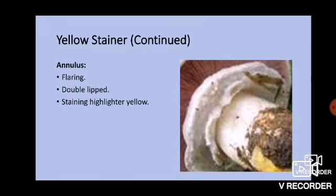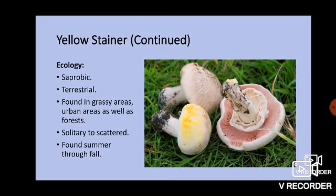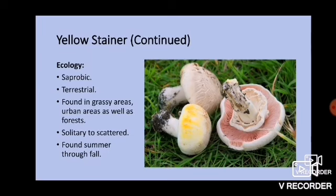You can see that highlighter yellow at the base. The annulus is double-lipped with both lips visible, and also stains a highlighter yellow if bruised. Around the margin area you can see that very almost urine-yellow or highlighter-yellow bruising. The ecology is saprobic and terrestrial, found in grassy areas, urban areas, and sometimes forests, though forest Agaricus tend to be very heavily scaled. These are solitary to scattered and found summer through fall.